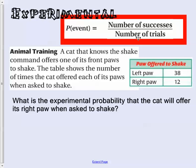But when we actually do the experiment, it might have happened three times out of ten. It just depends on what happens when you actually do it. Experimental would be the number of successes over the number of trials. For example, if we're training our cat to know how to shake on command, and they offer one of its front paws, we could look to see how many times it offered its left versus its right.